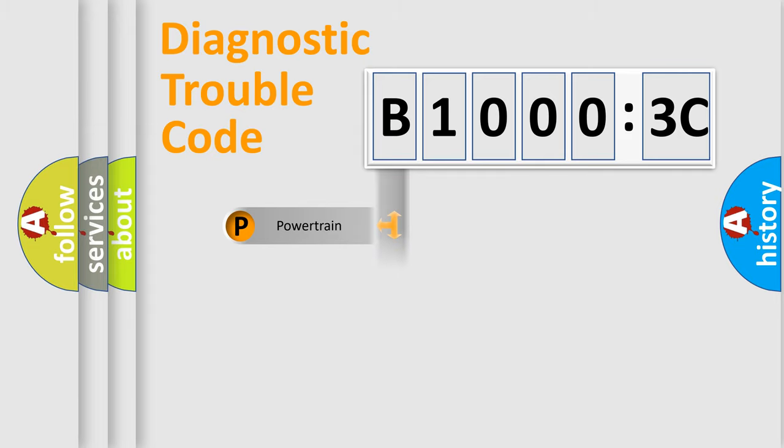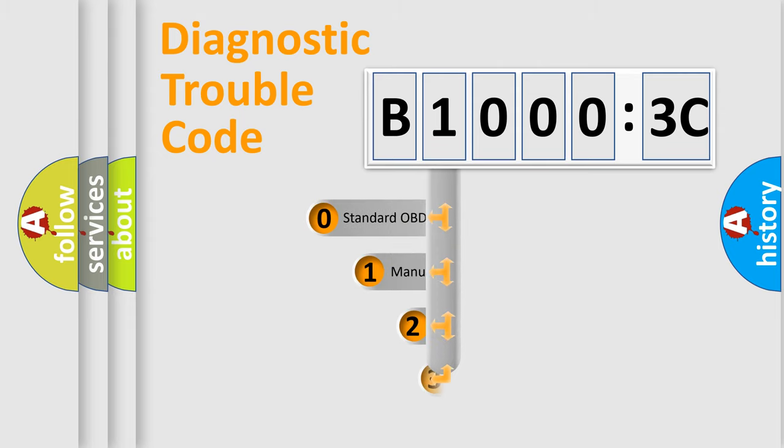Powertrain, Body, Chassis, Network. This distribution is defined in the first character code.